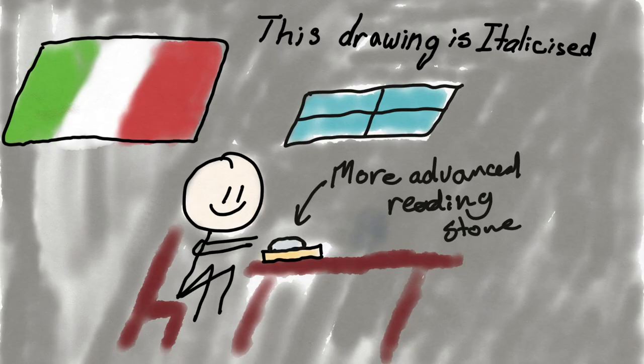The origins of more modern glasses can be traced back to the 13th century in Italy, where the first recorded use of eyeglasses was documented. These early glasses were simple magnifying lenses, held by the hand, or placed on the table to aid in reading or close-up work.